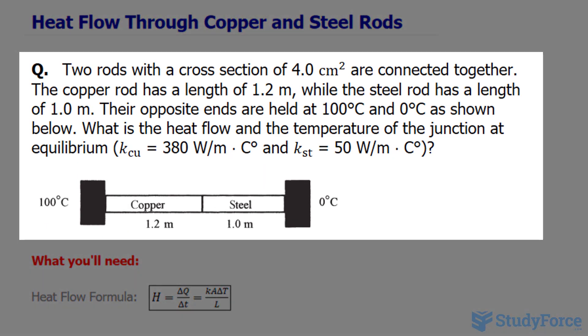Two rods with a cross-section of 4.0 centimeters squared are connected together. The copper rod has a length of 1.2 meters, while the steel rod has a length of 1.0 meters. Their opposite ends are held at 100 degrees Celsius and 0 degrees Celsius as shown below.